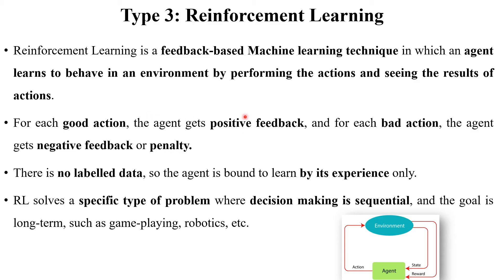What is reinforcement learning? Reinforcement learning is a feedback-based machine learning technique. There is one agent, and the agent can learn from the behavior of the environment. It performs a particular action, and after performing that action, a result is generated. For each good action, the agent gets positive feedback, and for each bad action, the agent gets negative feedback — or we can say, a penalty.